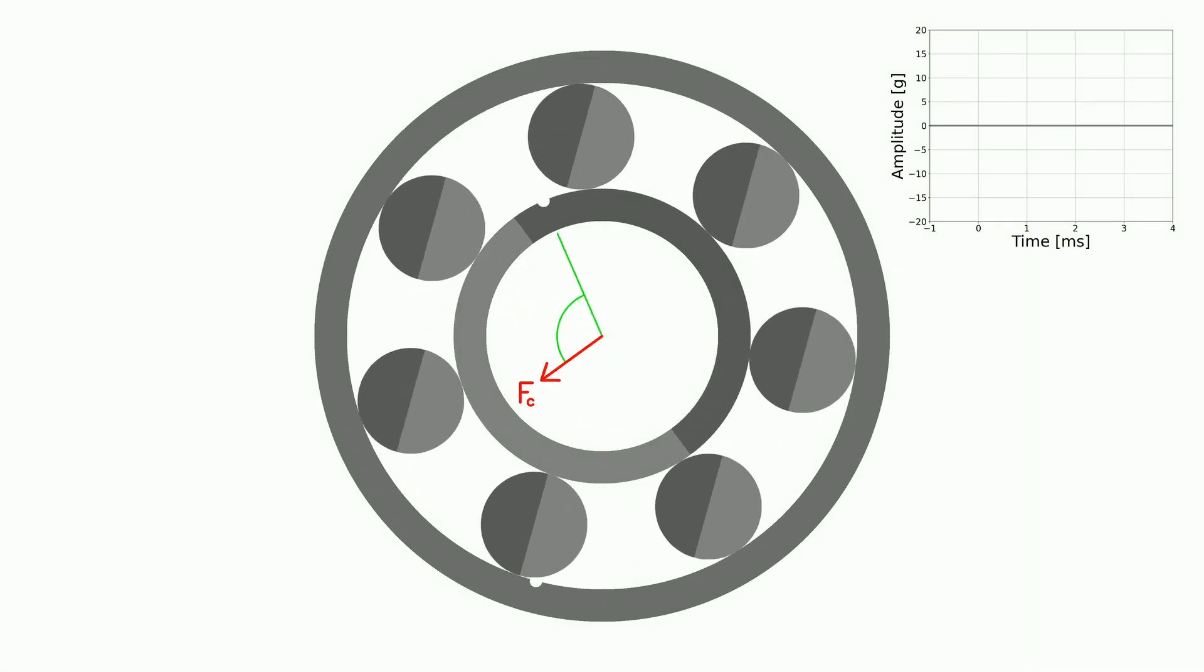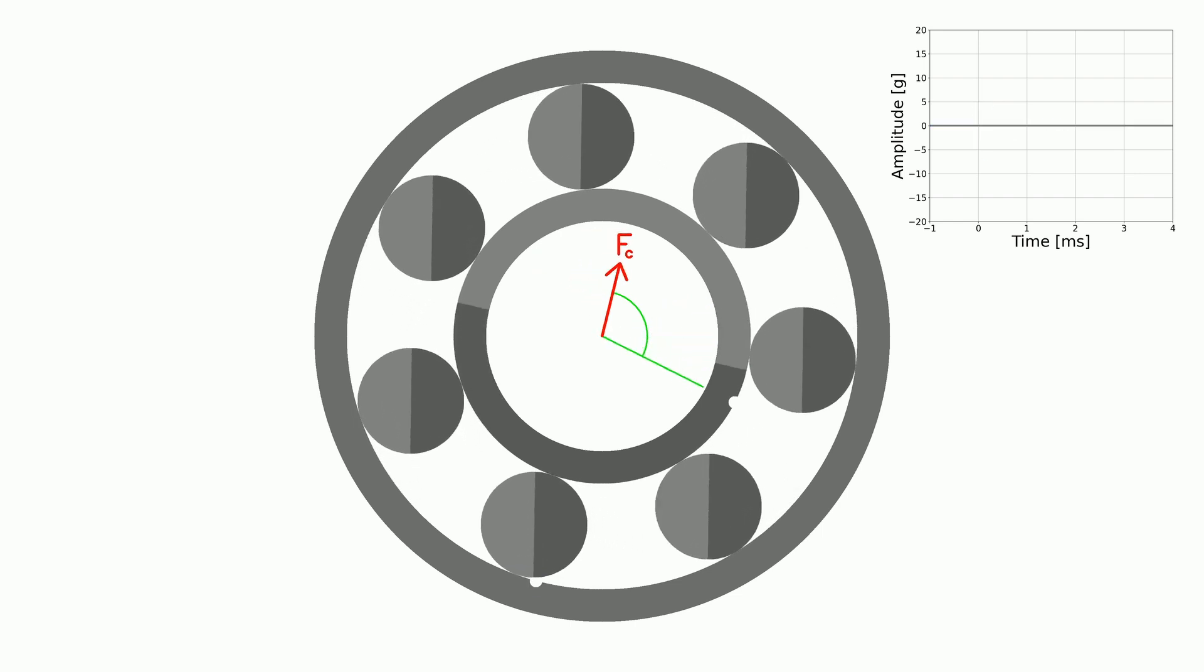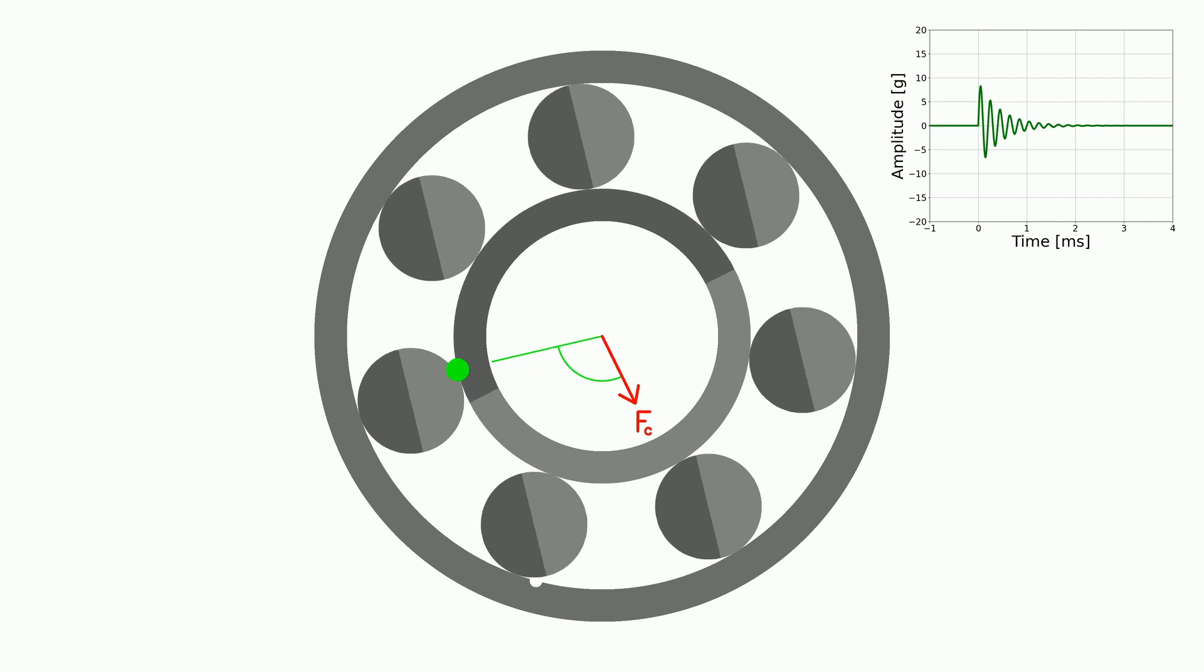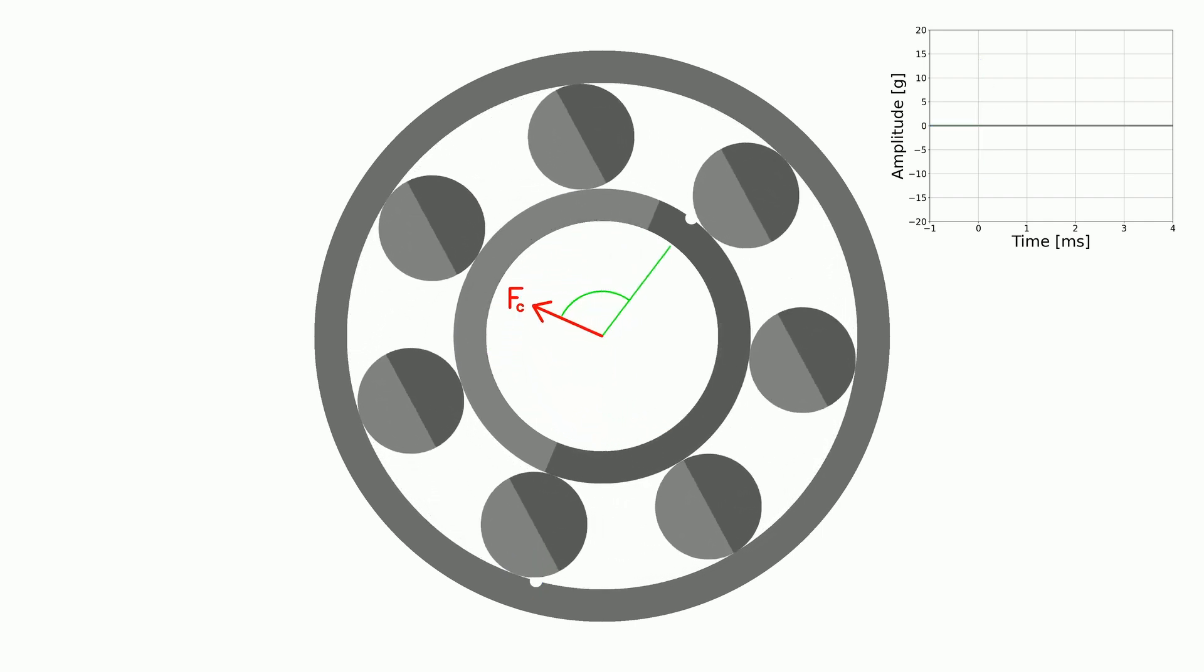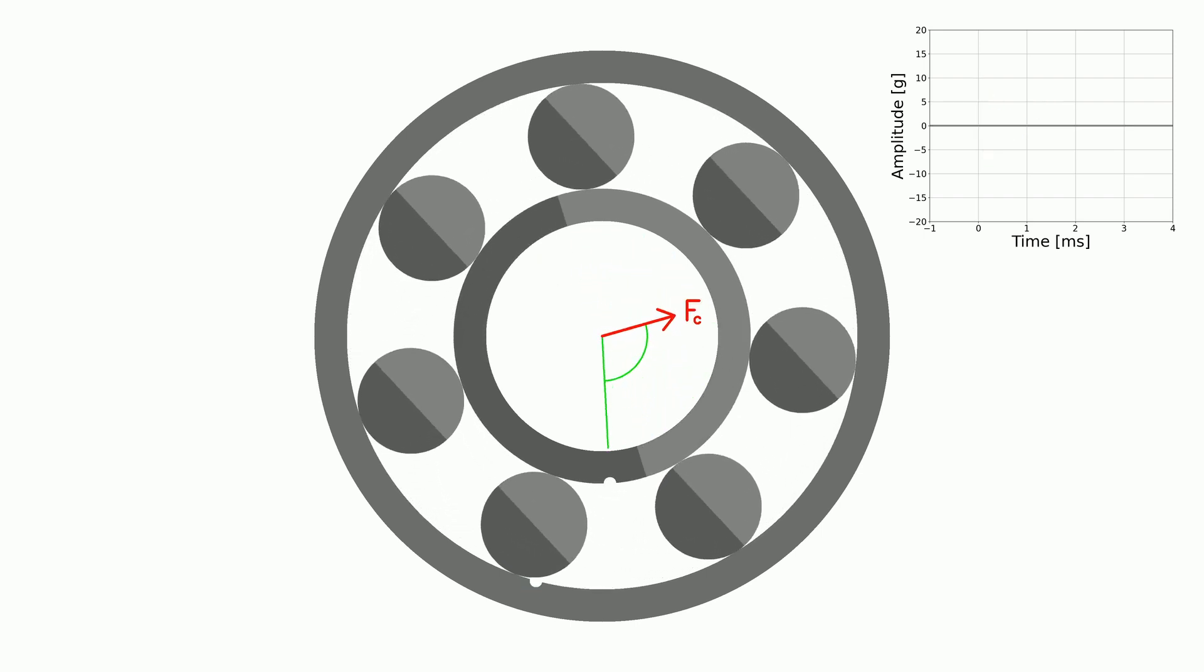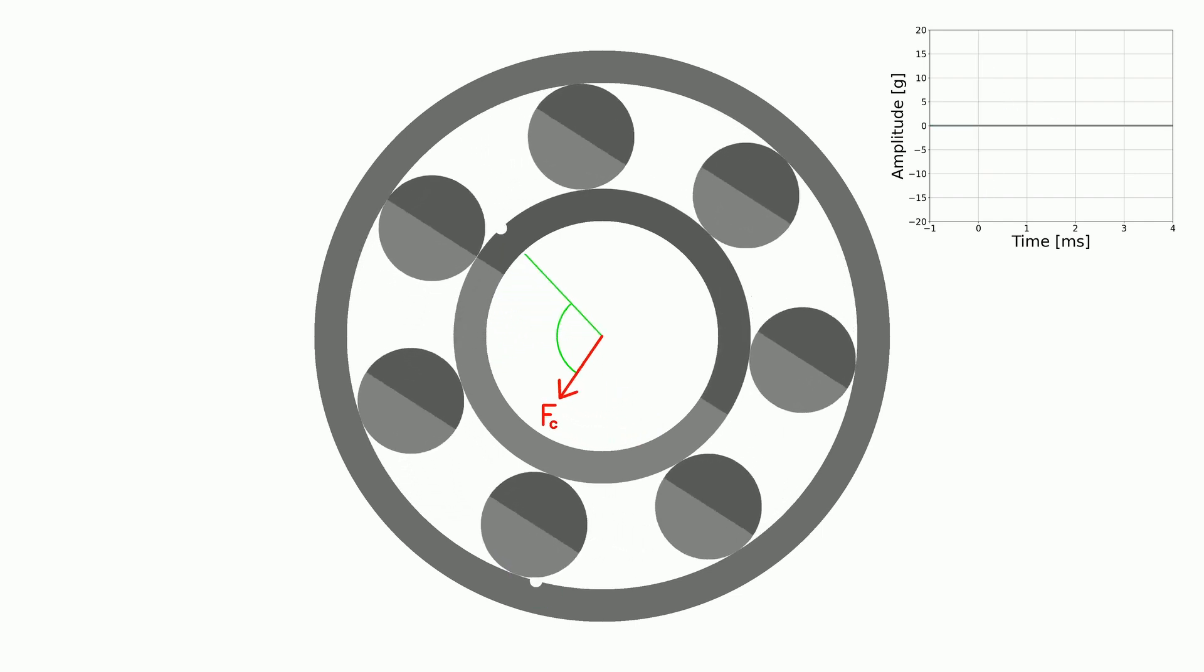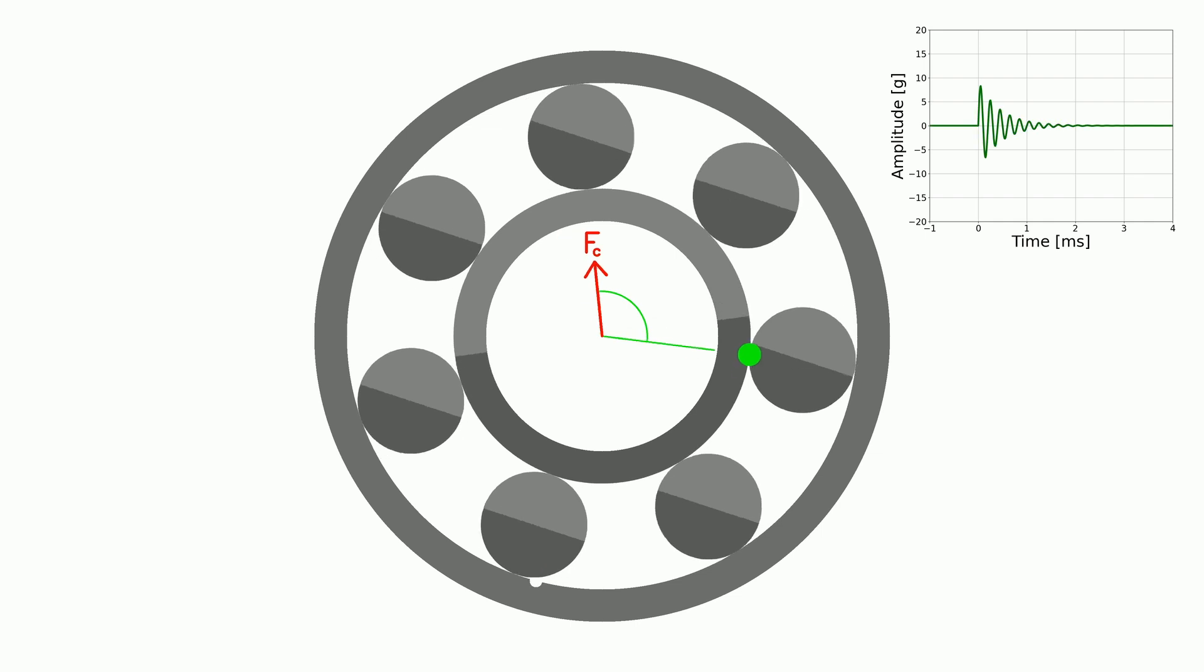This is what it looks like if there is a fault on the outer race and on the inner race. The outer race shocks are modulated like in the previous example. The inner race shocks are not. Because the fault on the inner race rotates with the shaft. Therefore, the force acting on the fault is always the same.